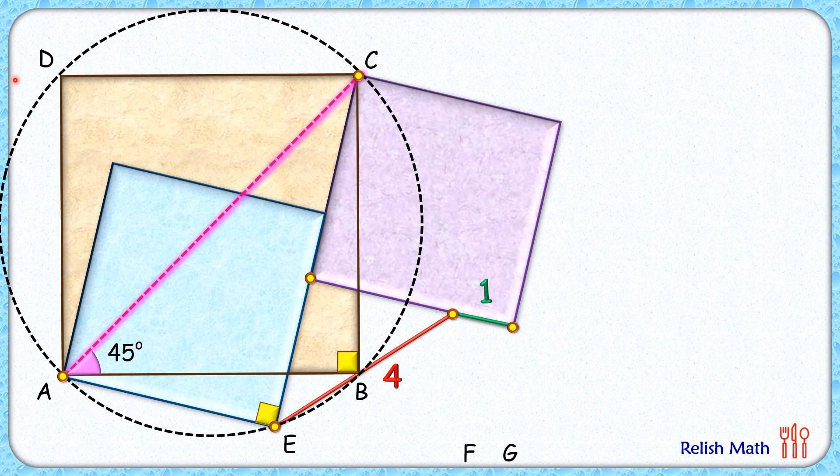Now, with respect to the circle, CB is the chord which is sustaining an angle of 45 degrees at the segment. By theorem, it will sustain the same angle of 45 degrees in the remaining part of the segment. Thus, at point E, this chord CB will sustain the same angle of 45 degrees.